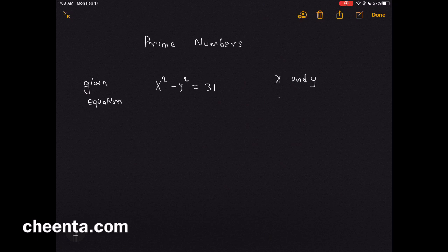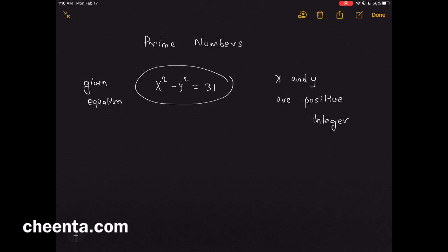Let's talk about prime numbers. There is a very simple problem: x² - y² = 31. This is the given equation, and it's also given that x and y are positive integers. Can you find out the value of x and y that works? You can pause the video here and give it a try on your own.